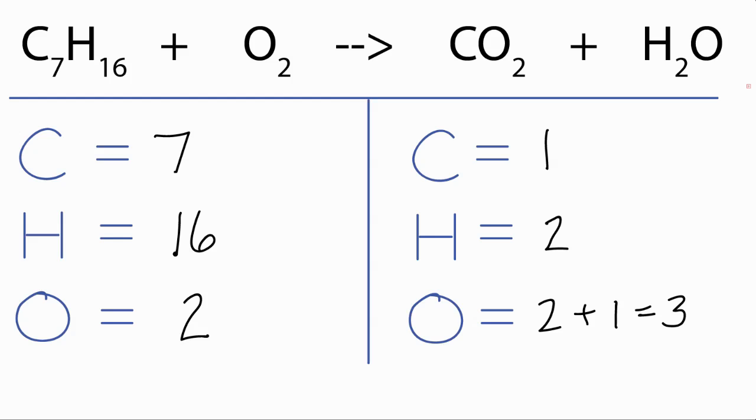Let's leave the oxygens to last, let's fix our carbons and hydrogens first. Carbons, all we have to do is put a seven in front of the CO2, so now we have one times seven, and we have seven carbons on each side.